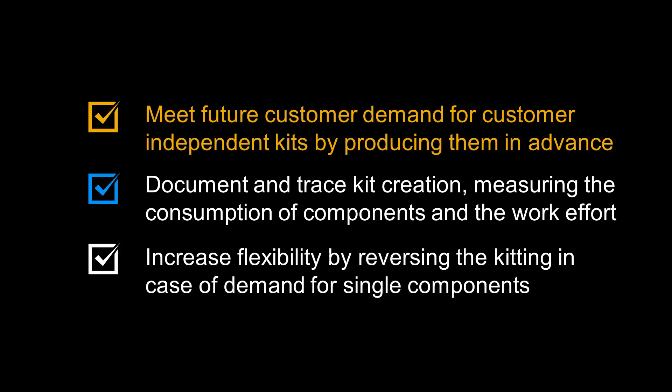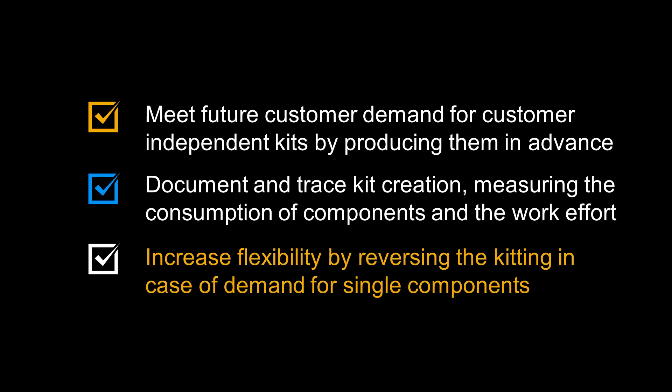Let us recap some of the benefits of kit-to-stock and reverse kitting. Kit-to-stock enables you to meet future customer demand for customer independent kits by producing them in advance. Controlled by a VAS order, you can document and trace kit creation, measuring the consumption of components and the work effort. You can increase flexibility by reversing the kitting in case of demand for single components.